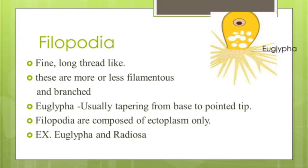Filopodia are fine, long, thread-like pseudopodia that are more or less filamentous and branched. For example, Nuclearia. They taper from base to point. As you can see in the diagram, filopodia are composed of ectoplasm only, with no involvement of endoplasm.